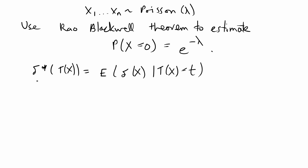Another property is about the bias. Whether or not delta star t(x) is biased depends on the original estimator. If you plug in an unbiased estimator for whatever you're looking for, then the Rao-Blackwell estimator will also be unbiased. Similarly, if you plug in a biased estimator, the Rao-Blackwell estimator will be biased. So if you plug in biased, you get out biased; if you plug in unbiased, you get out unbiased.